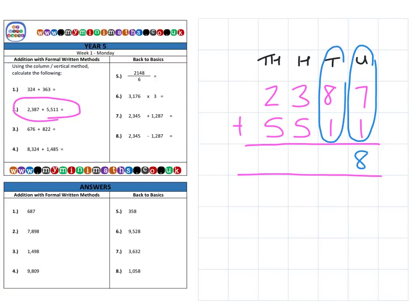Then we have the 8 tens plus the 1 ten, which is 9 tens or 90. Then we have 300 plus 500, which is 800. And then 2,000 plus 5,000, 7,000 for a final answer of 7,898.